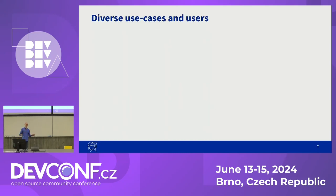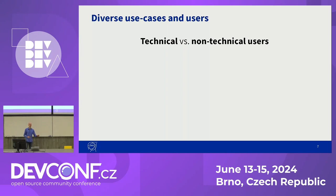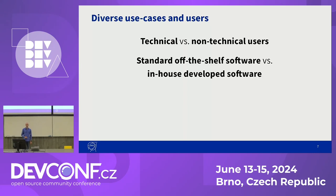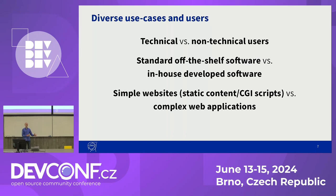Our web services also have a very diverse use case. We have technical and non-technical users, some people who know exactly what they want to do and others who just want to have a basic website. We have people who just want to deploy standard off-the-shelf software, like for example a Discourse forum, whereas others want to deploy the Python or Java application that they developed themselves, for example to analyze and visualize some data. Some websites are very simple — just static content — whereas others are complex web applications that require databases, caches, message queues, and a whole bunch of workers in the background.